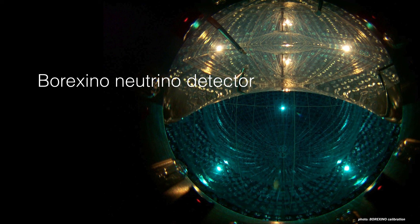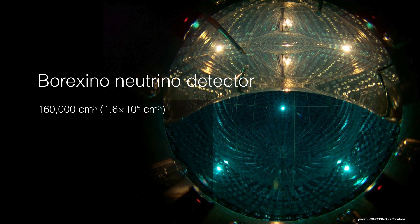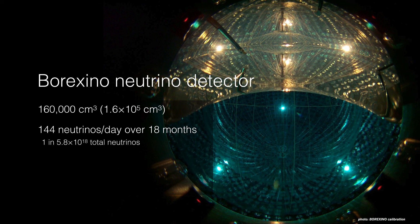How rare is rare? Here's an example - the Borexino neutrino detector in Italy. It has a volume of about 160,000 cubic centimeters, a pretty large volume. About 144 neutrinos per day were detected over 18 months. That's not to say there weren't any neutrinos passing through except for just 144 a day - there were trillions and trillions of neutrinos, but only 140 of them were detected every day over the 18-month operation. That works out to about 5.8 times 10 to the 18 neutrinos.